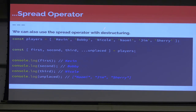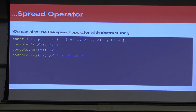You can also use the spread operator with destructuring, which is amazing. Here we have players: Kevin, Bobby, Nicole, Naomi, Jem, Sherry — in the order they placed. You mostly care about first, second, and third place. You can destructure: const [first, second, third, ...unplaced] = players. That makes Kevin first, Bobby second, Nicole third, and unplaced is all the rest. You can also use it with destructuring objects: const { x, y, ...z } = object gives you 1 for x, 2 for y, and z is an object with a equal to 3 and b equal to 4.